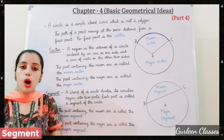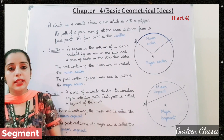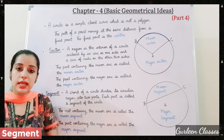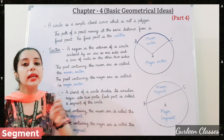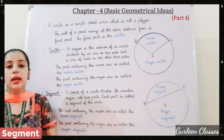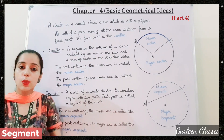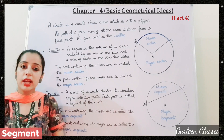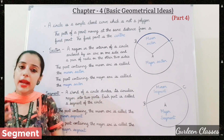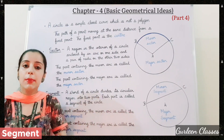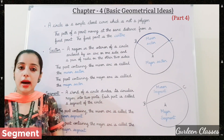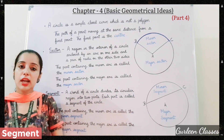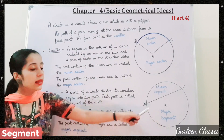Next, segment. A chord of a circle divides its circular region into two parts — each part is called a segment of the circle. If you divide a circular region into two equal parts, that is a semicircle. If you divide it into any two parts, that is known as a segment of the circle. The part containing the minor arc is called the minor segment, and the part containing the major arc is called the major segment.